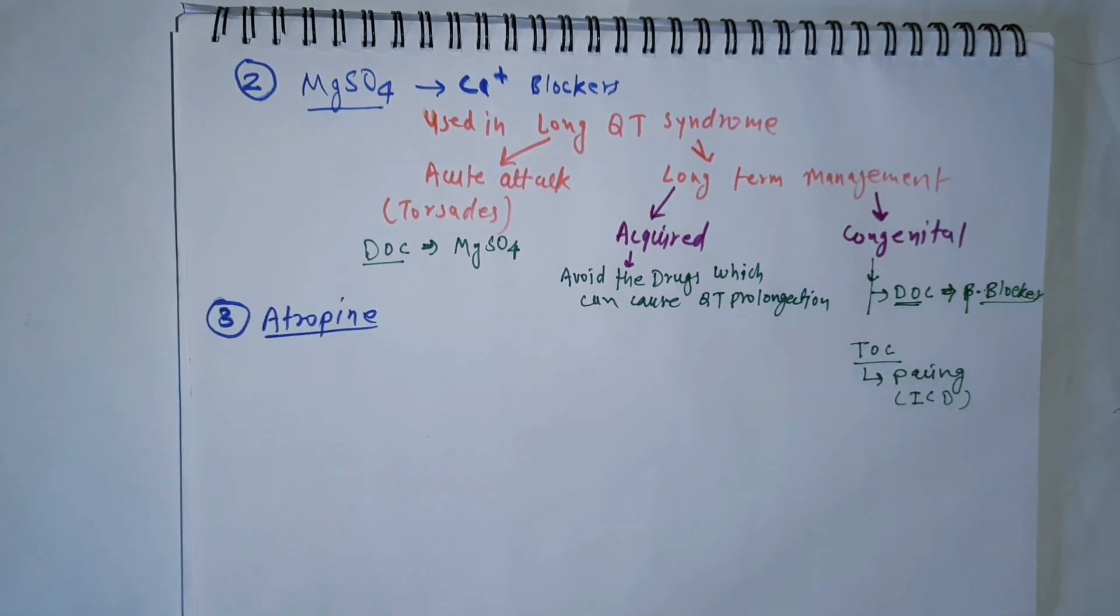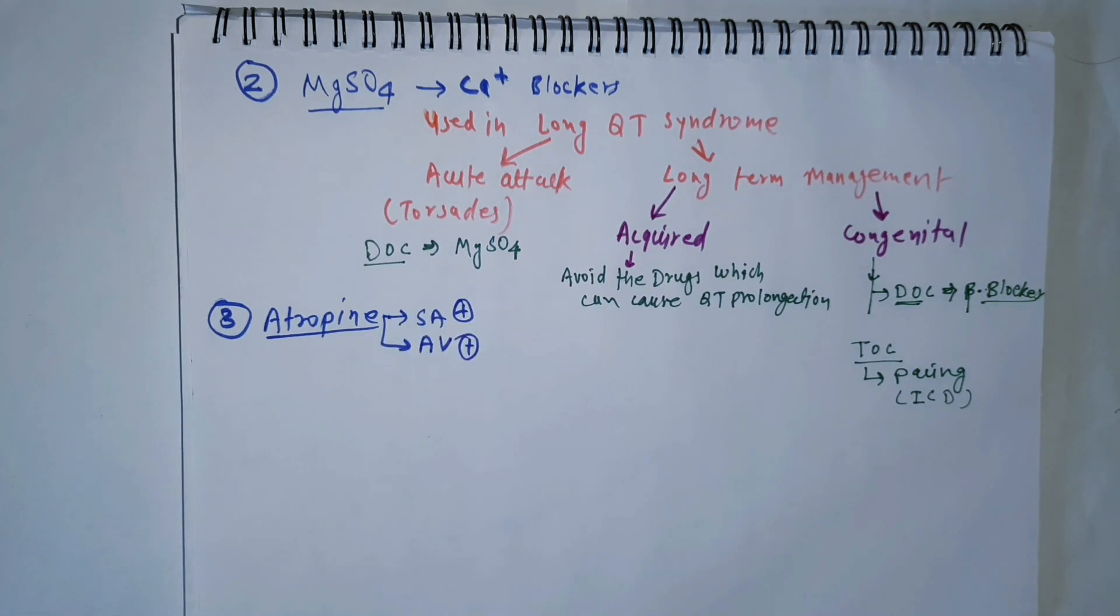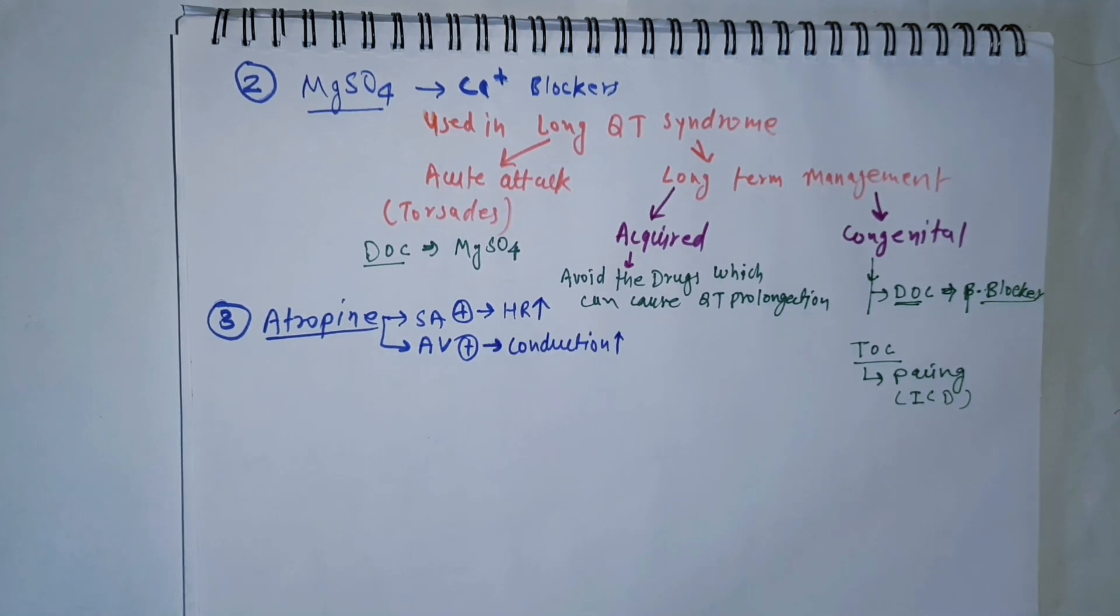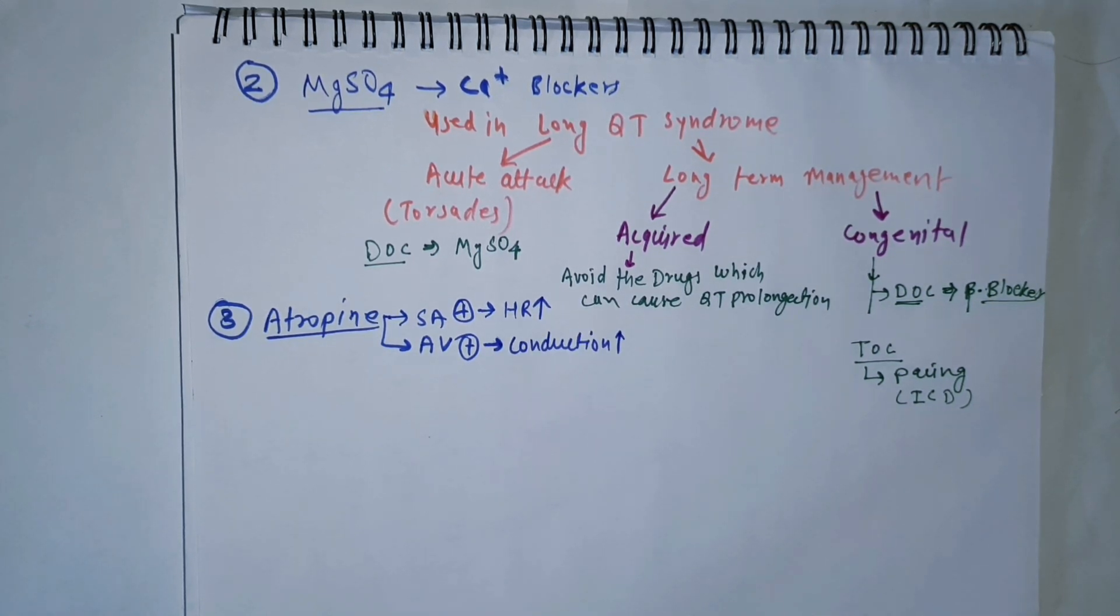Another drug of class 5 is atropine, which stimulates both the SA node and AV node. Stimulation of SA node causes increased heart rate, and stimulation of AV node increases conduction.